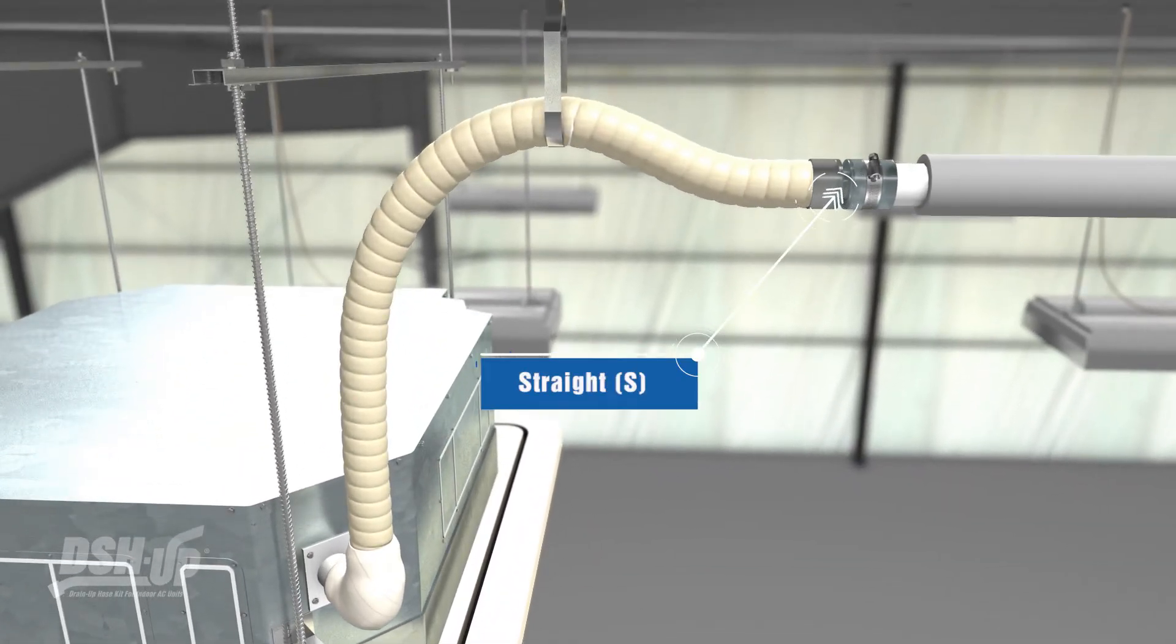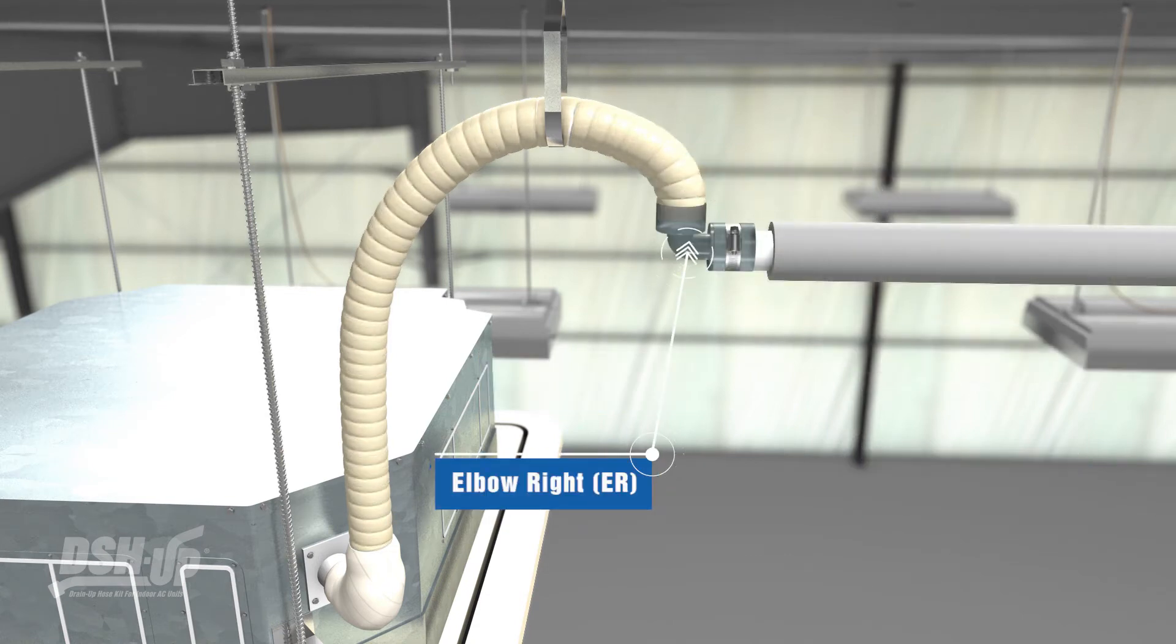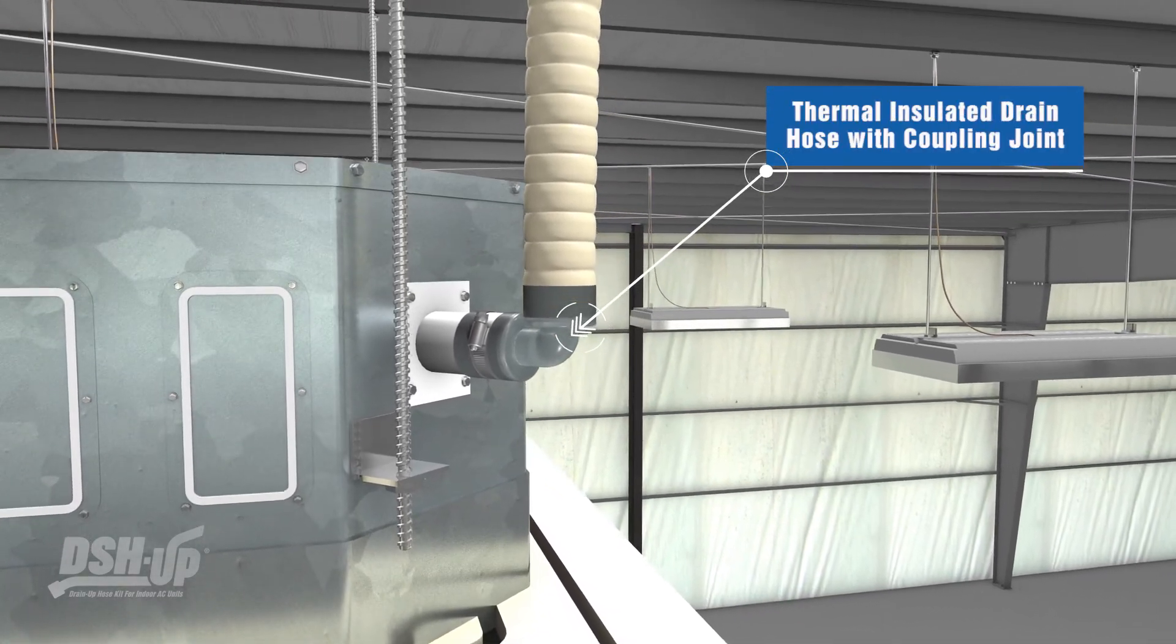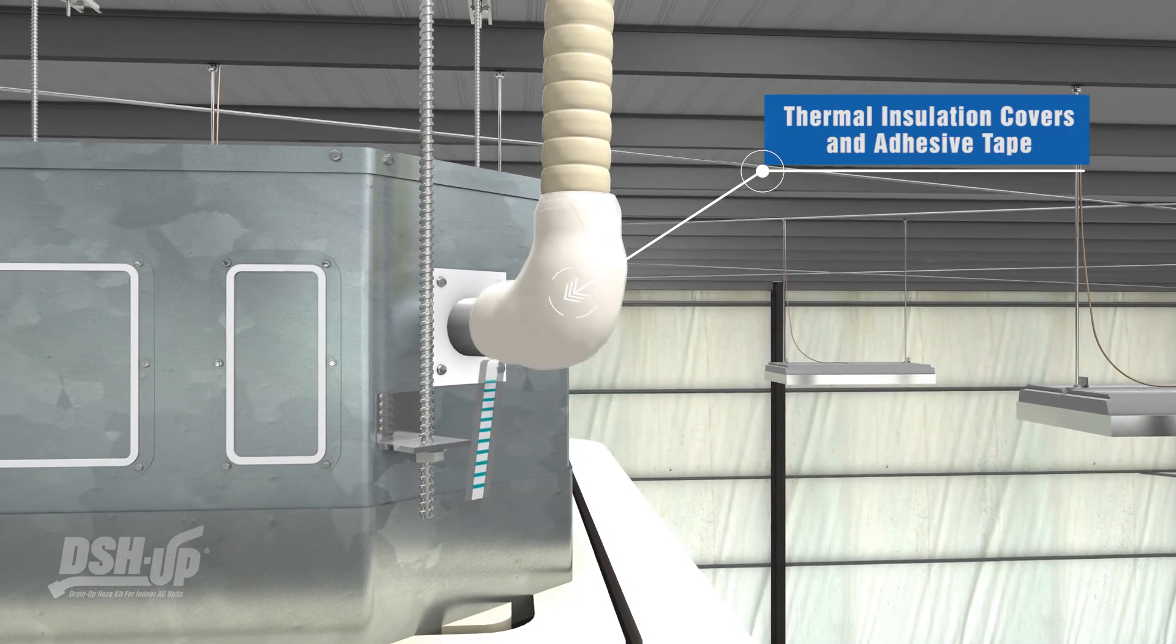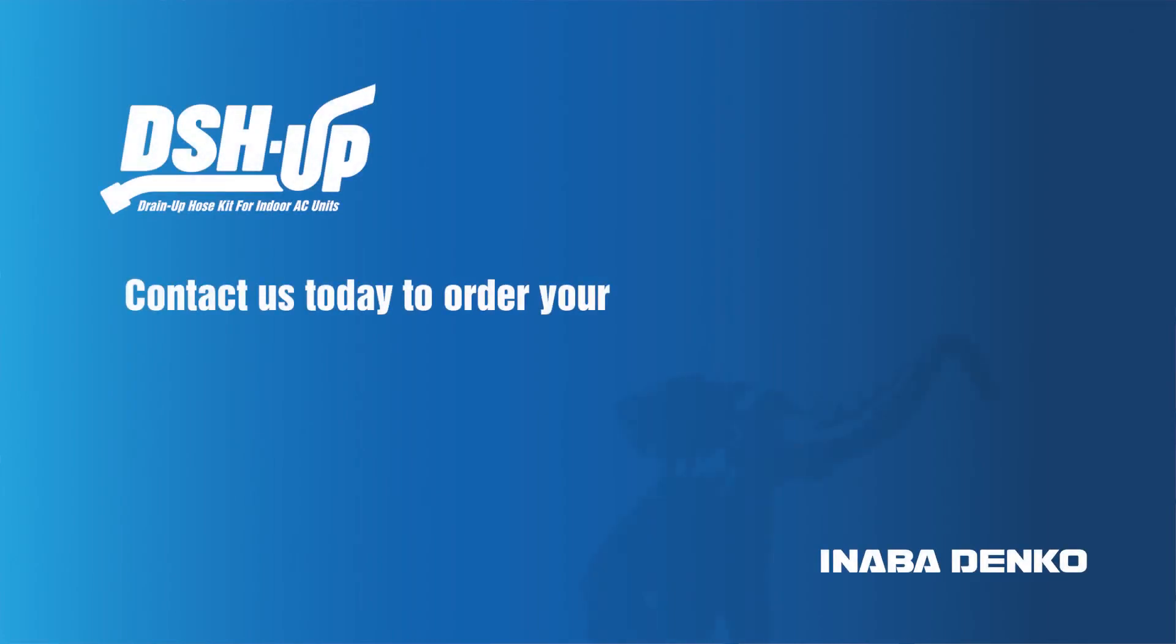DSH-UP kits come in three commonly used options: straight, elbow, and elbow-right, and include thermal insulated drain hose with coupling joint, hose band, thermal insulation covers, adhesive tape, and water leakage check sheet. Contact us to order your DSH-UP drain-up hose kit today.